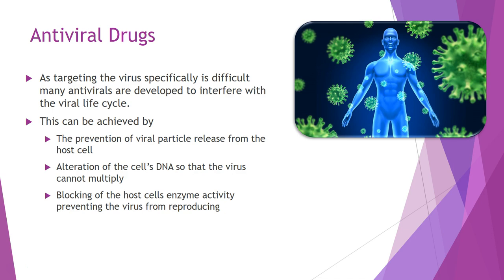We need to stop the replication process or the release process, but we can't simply kill the virus — we need to stop those replication processes within the host cell, hopefully without damaging the host cell too much. Targeting the virus specifically is difficult, so many antivirals are developed to interfere with the viral life cycle: prevention of viral particle release from the host cell, altering the cell's DNA so the virus can't multiply, or blocking the host cell's enzyme activity so the complete virus can't mature and be released. We will look at two case studies — one on influenza and one on HIV — as our examples of antiviral medications.